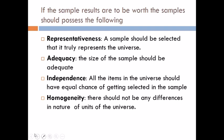Homogeneity: when we talk of homogeneity, we mean that there is no basic difference in the nature of the units of the universe and that of the sample. If two samples are selected from the same population, they should give more or less the same result. For example, if I take two samples A and B from a population and calculate the mean height of students, group A and group B should give almost the same result.